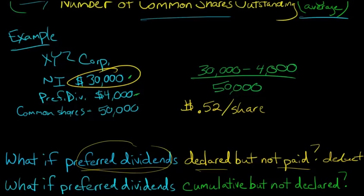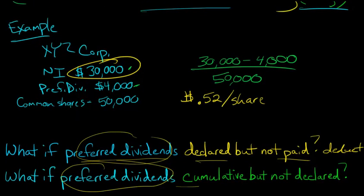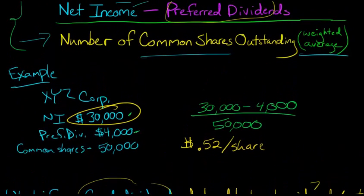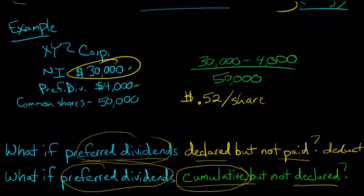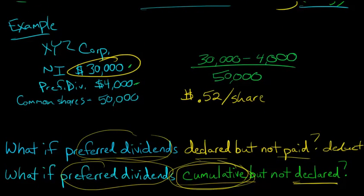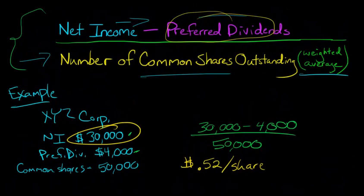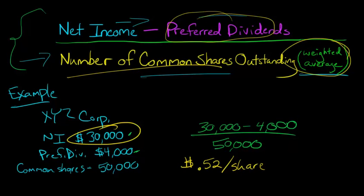Now, what if the preferred dividends are cumulative — if you don't know what this is, go to my other video about preferred dividends — but what if they're cumulative but they haven't been declared? Do we deduct them? Even if they haven't actually been declared, but they're cumulative, we go ahead and deduct them in our calculation of earnings per share as well. So whether or not the dividends have been paid, if they've been declared, or whether they haven't been declared but they're cumulative, we deduct those preferred dividends from income, scale everything by the weighted average common shares outstanding throughout the year, and that yields our earnings per share — which in this case was $0.52 a share.